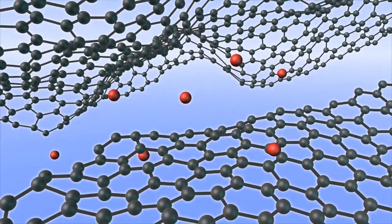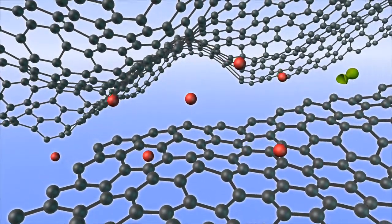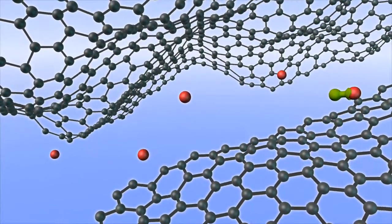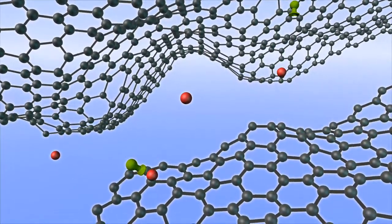In the course of exfoliating individual sheets, oxygen is added to the carbon backbone. To unearth the amazing electronic properties of graphene, that oxygen must be removed.